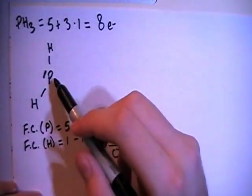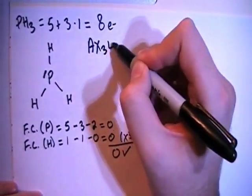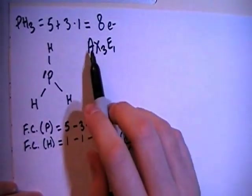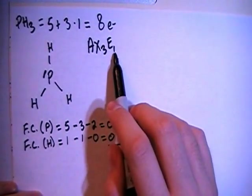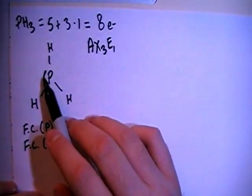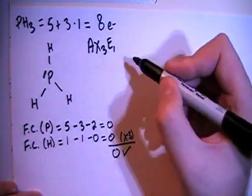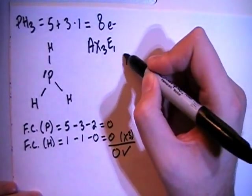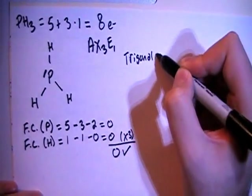Now, in terms of shape, if you look at this structure, this is going to end up being an AX3E1 structure, meaning there's a central atom surrounded by 3 peripheral atoms, and the central atom has 1 non-bonding pair. So 1, 2, 3 peripherals, and 1 non-bonding pair. When you have an AX3E1 type structure, that means that the shape is going to be what's called trigonal pyramidal.